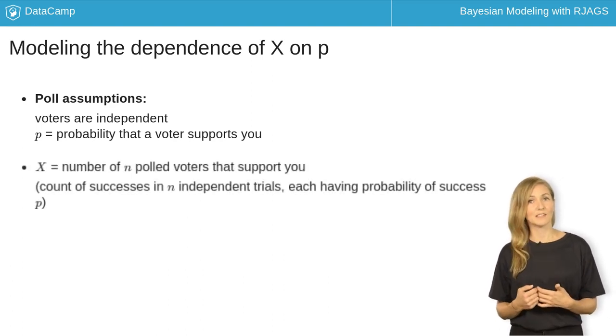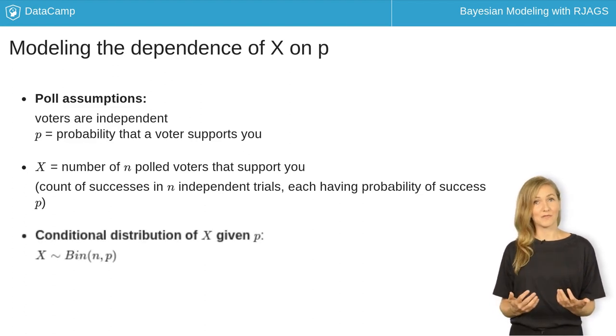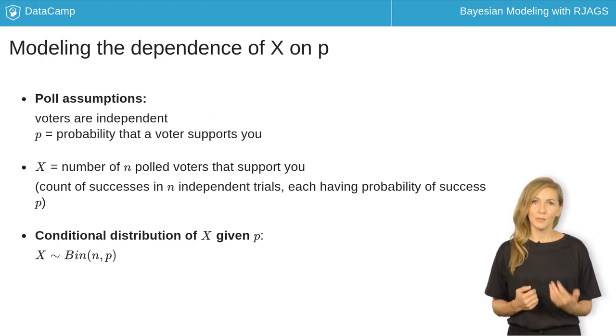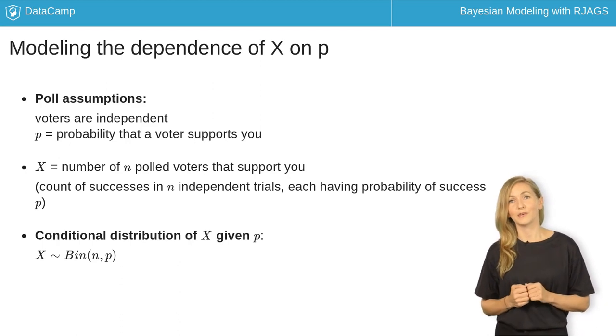In turn, you can view x, the number of n polled voters that support you, as a count of successes in n independent trials, each having probability of success p. This might sound familiar. Under these settings, the conditional dependence of x on p is modeled by the binomial distribution with parameters n and p, communicated by the mathematical notation here.